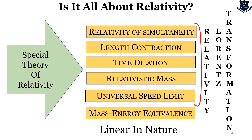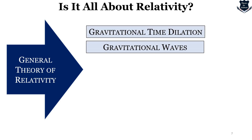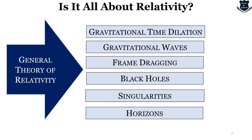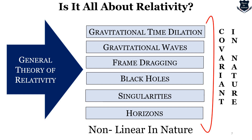When we move from Special Relativity to General Theory of Relativity, we see gravitational time dilation, gravitational waves, frame dragging, black holes, singularities, event horizons — all of these are mostly covariant in nature. What I am trying to convey is that they are non-linear in nature. From the linear frame of reference, from a linear learning of physics, we are now moving into non-linear in nature.